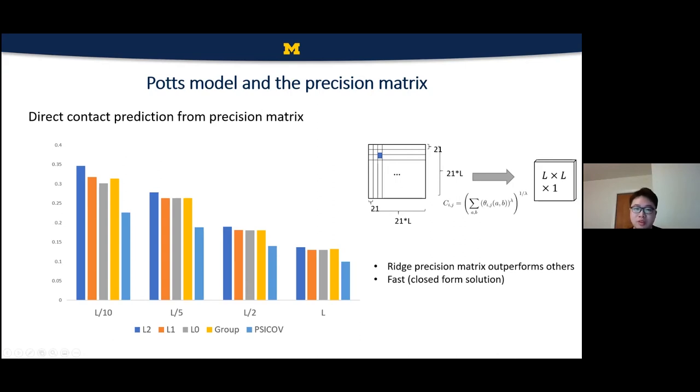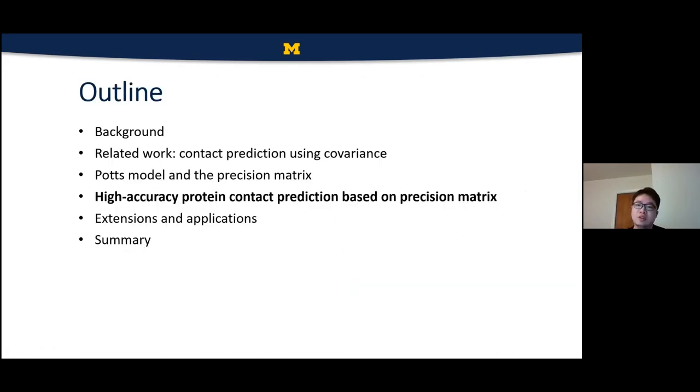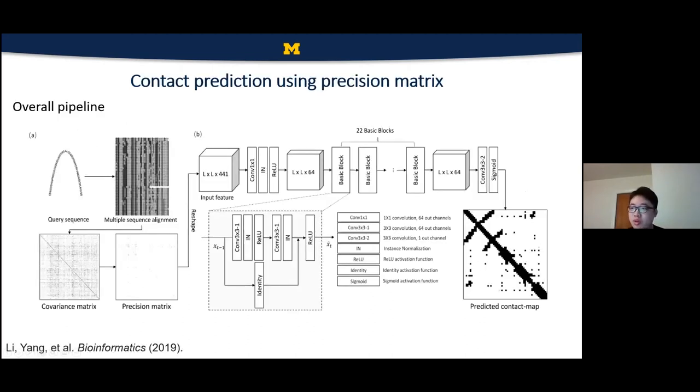So we have finally determined the feature extraction strategy. And we can show the pipeline of our proposed ResPRE based on the precision matrix. So actually the biggest difference between ResPRE and the previous work, DeepCov, is that a matrix inversion is added here. And we also replace the previous convolutional neural networks with ResNet as a backbone structure of ResPRE.